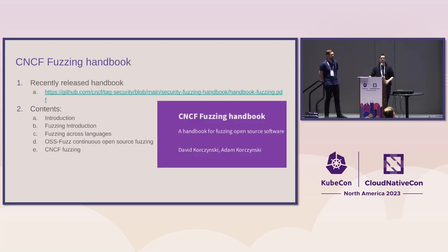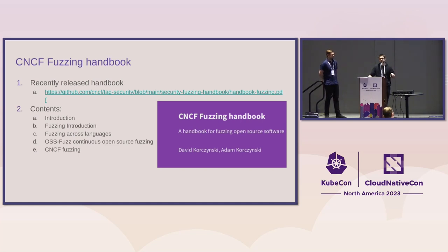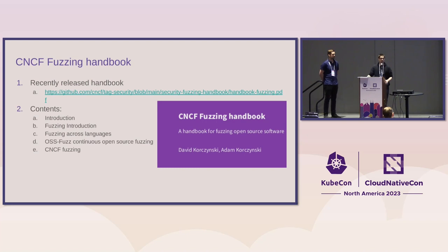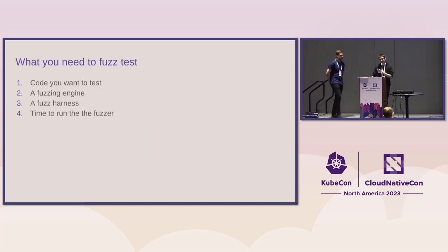We just released a fuzzing handbook that goes into what fuzzing is and how to fuzz in various languages — C/C++, Python, and Go. It also has a thorough guide to OSS-Fuzz with an end-to-end walkthrough showing various details you don't really find in the OSS-Fuzz documentation, giving a very pragmatic approach to integration. And if you're a CNCF project maintainer, once you integrate into OSS-Fuzz you can also claim a bounty and get a reward for submitting a project and enrolling.